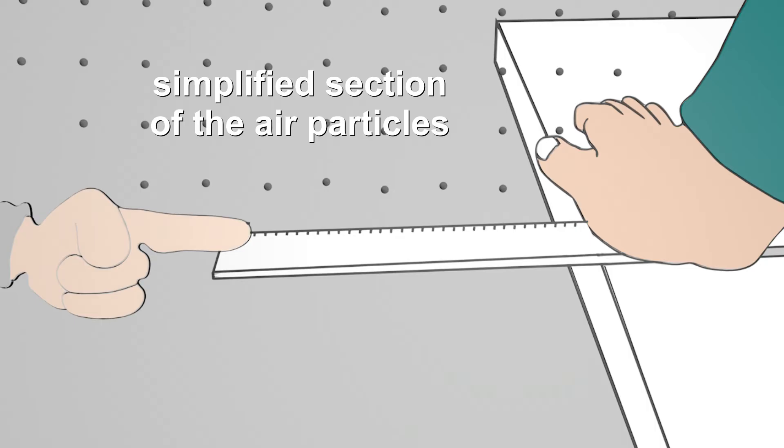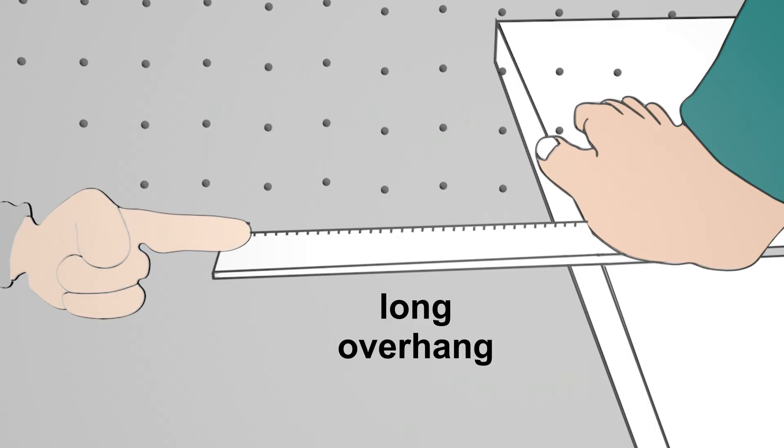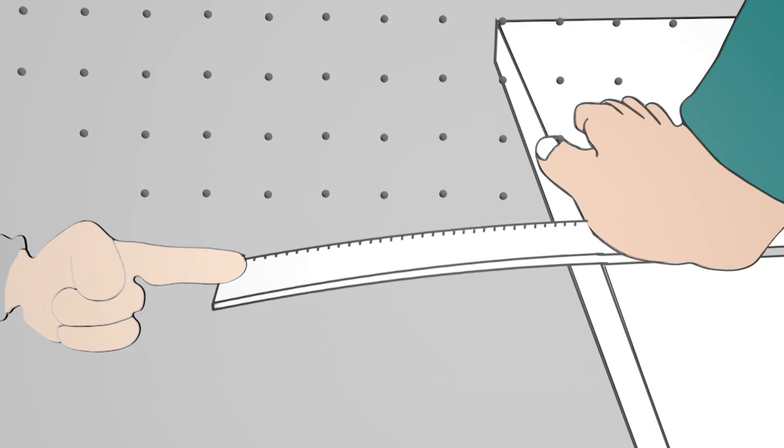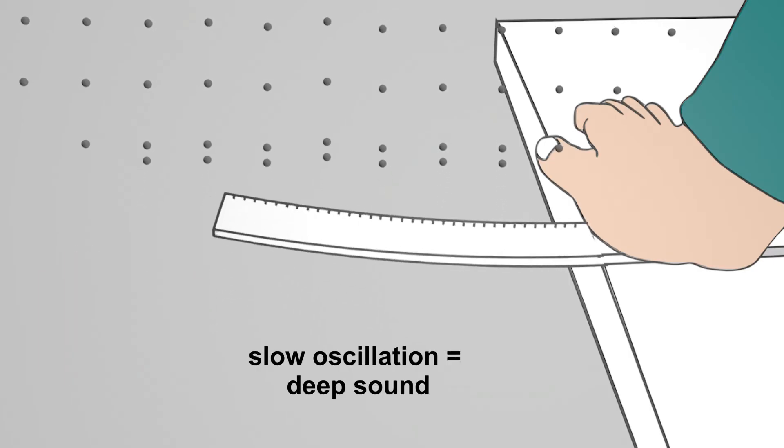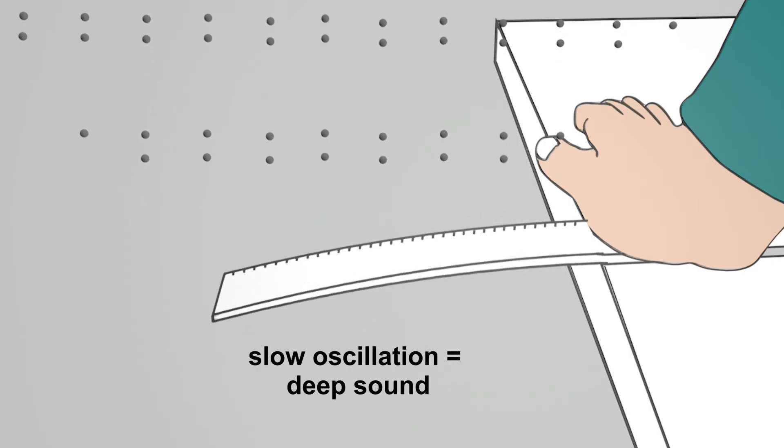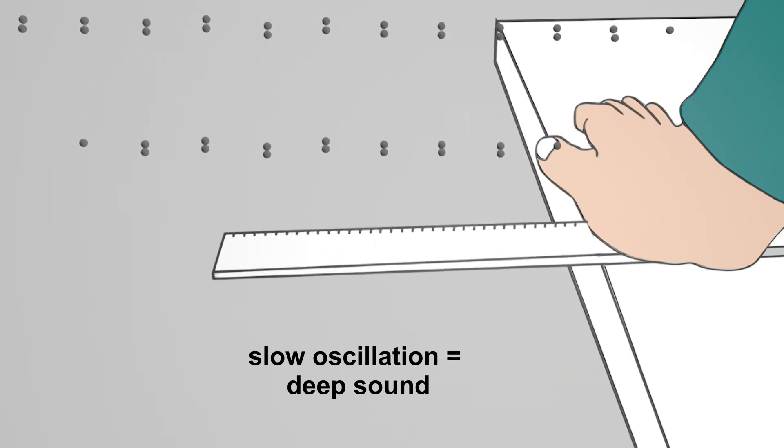First the ruler lies on the table so that a long piece protrudes. If you deflect the ruler, the ruler swings back and forth relatively slowly and slowly hits the surrounding air particles. These relatively slow oscillations are then transmitted to our eardrum in the ear and we hear a deep sound.